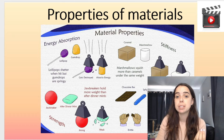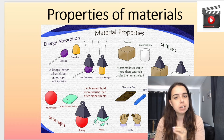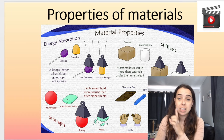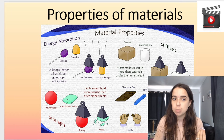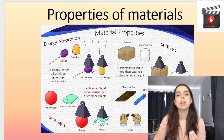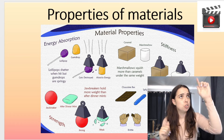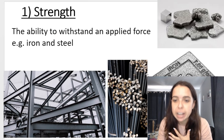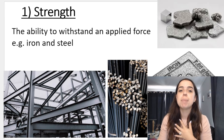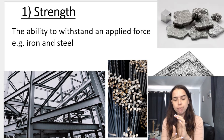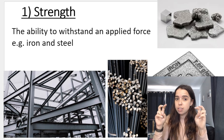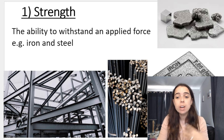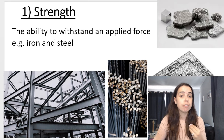We're going to be looking at properties of materials. Materials can have a lot of different properties depending on how you define or look at them. You need to know these properties as they can often be asked as definitions, or you can be given a list where you have to choose the correct properties for the correct materials. The first property is strength — the ability to withstand an applied force. If something has high strength, it will withstand the force without breaking, like iron or steel, which are very strong materials.